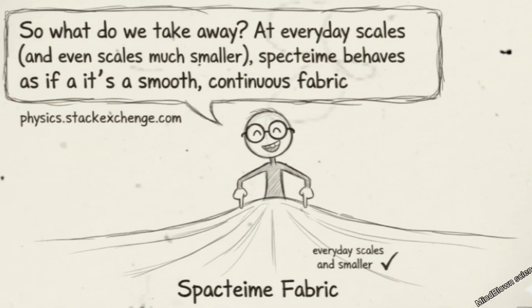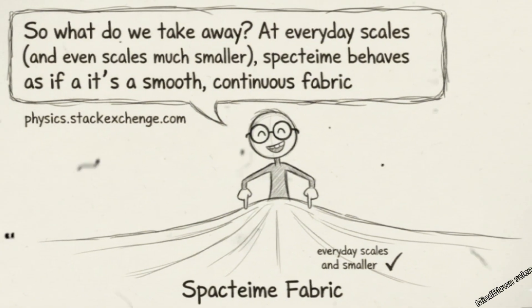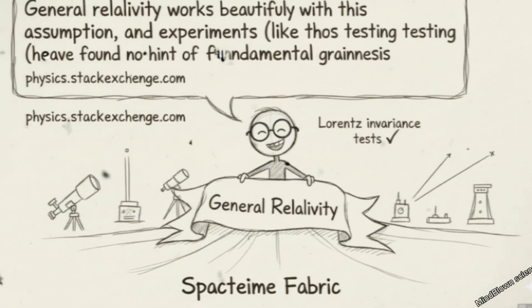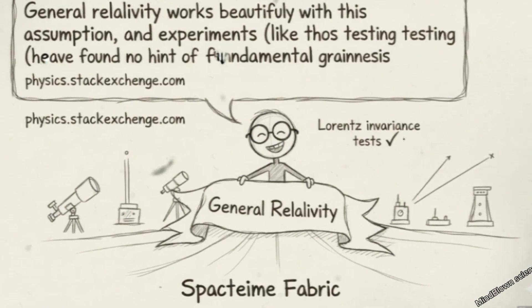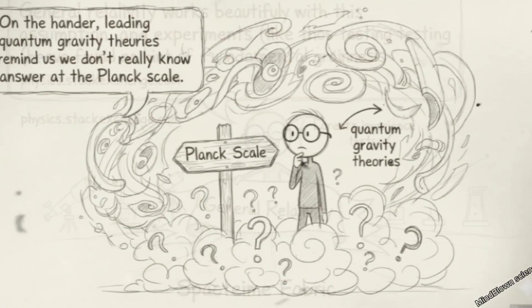So what do we take away? At everyday scales, and even scales much smaller, spacetime behaves as if it's a smooth, continuous fabric. General relativity works beautifully with this assumption, and experiments like those testing Lorentz invariants have found no hint of fundamental graininess.